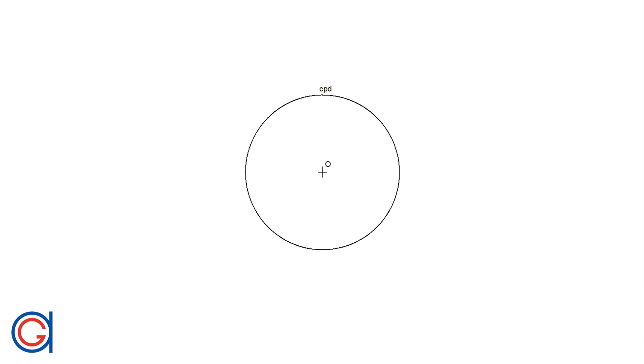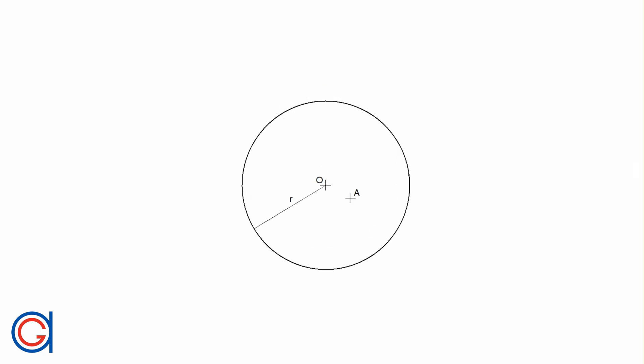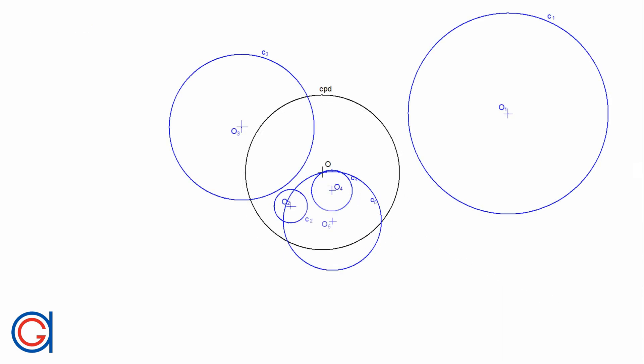Hello, today we are going to learn how to find the inverse element of any given circle, which can be another circle or sometimes a line, with respect to a reference circle. The inversion in a circle is a transformation which transforms one point A into its inverse point A prime, whose distances from the origin O equal the square of the radius of the circle which defines the inversion, satisfying the equation R squared equals OA times OA prime. In today's video we are going to learn how to draw the inverse of five different given circles shown in blue, covering all the different inversion options.